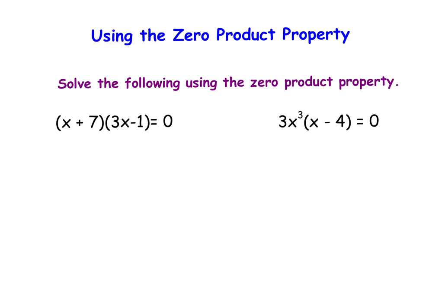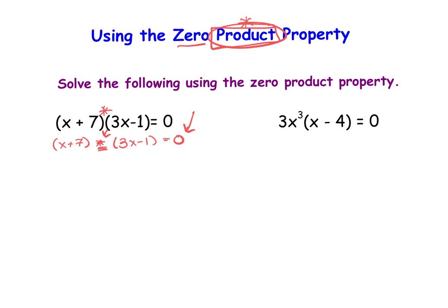To use the zero product property, we need two things: first, we need a product — meaning multiplication. Here we have (x + 7) times (3x − 1), so that's our multiplication. The second requirement is that the product equals zero itself. We have a multiplication equal to zero, so we know that either the piece (x + 7) has to be zero, or the piece (3x − 1) has to be zero, because they're being multiplied together and equaling zero.